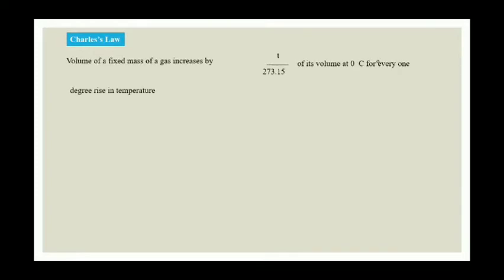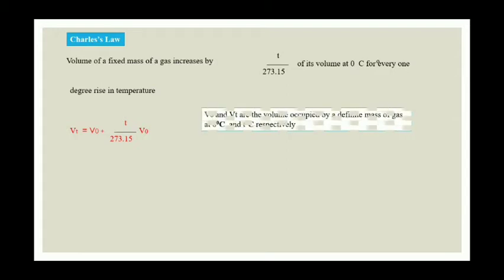Now Charles' law. It states that the volume of a fixed mass of a gas increases by T/273.15 of its volume at 0°C for every 1 degree rise in temperature. The mathematical representation is: Vt = V0 + (T/273.15) × V0, where V0 is the volume at 0°C and Vt is the volume at T°C. So if temperature increases by 1°C, volume increases by T/273.15 times its initial volume.